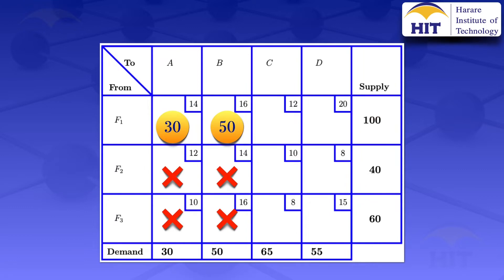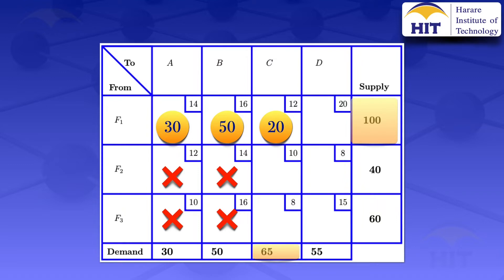We move to column C. Looking at this cell, the supply for F1 is 100 but we have already allocated 50 and 30, so the remaining supply is 100 minus 50 minus 30, which is 20. The demand for C is 65. The minimum of 20 and 65 is 20, so we allocate 20 units there. This reaches the supply capacity for F1, so we cross out row F1 — we can no longer allocate in this row.